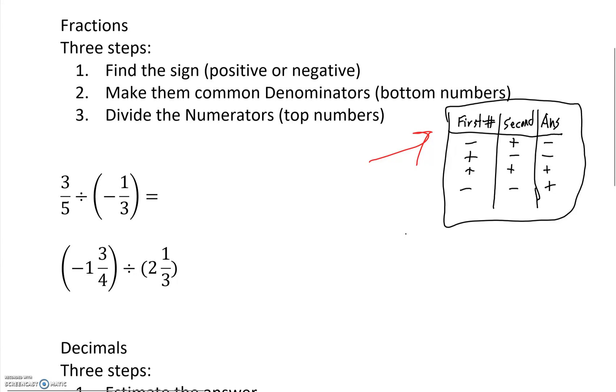The first step is find the sign - is it positive or negative? So first number, what number is it? Second number, what number is it? And then what the answer is. So in this case here, we have a positive first number and negative second number. So we'd look for one that has positive, negative, so therefore our answer is negative. We'd write that down.